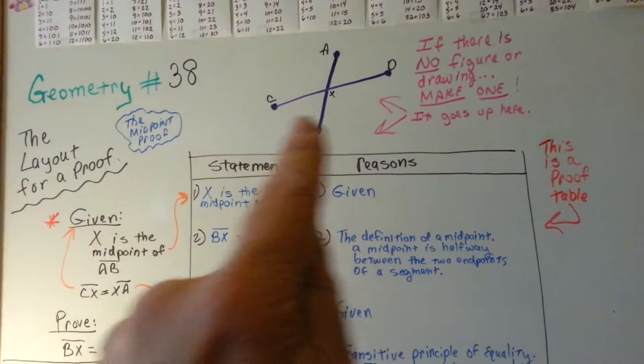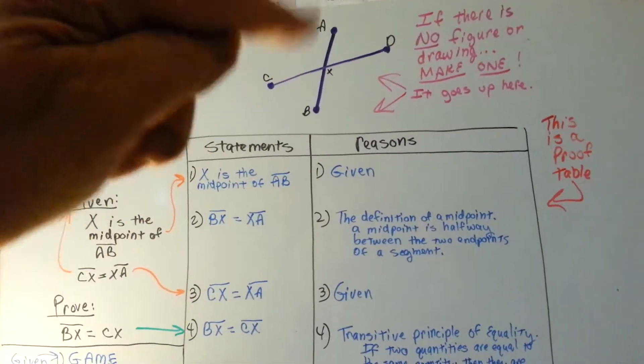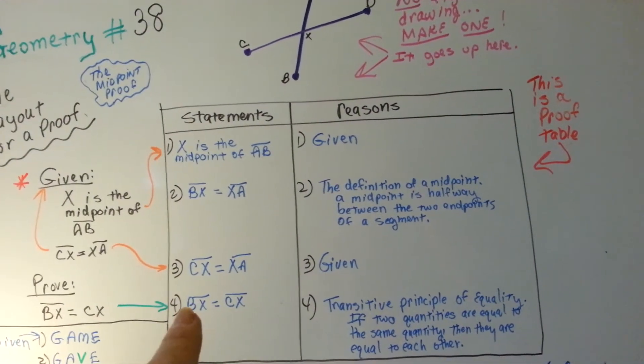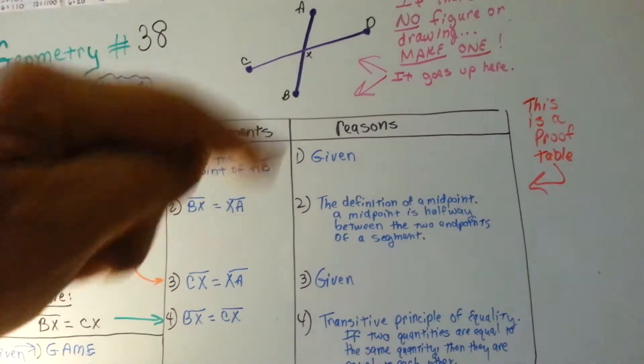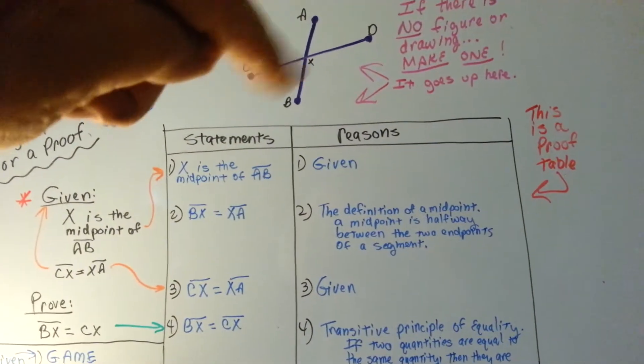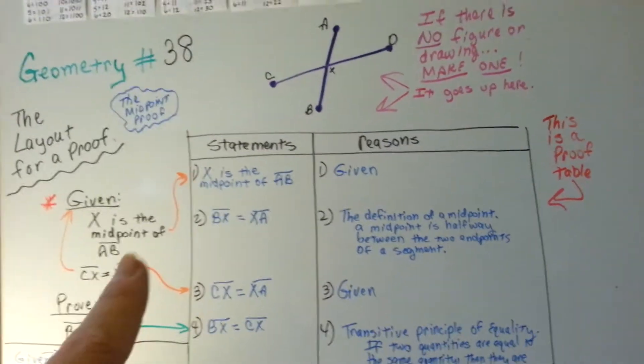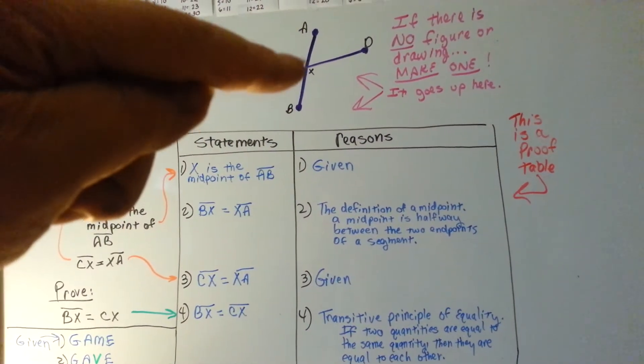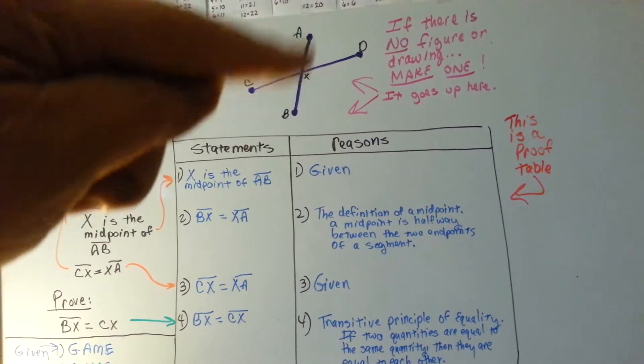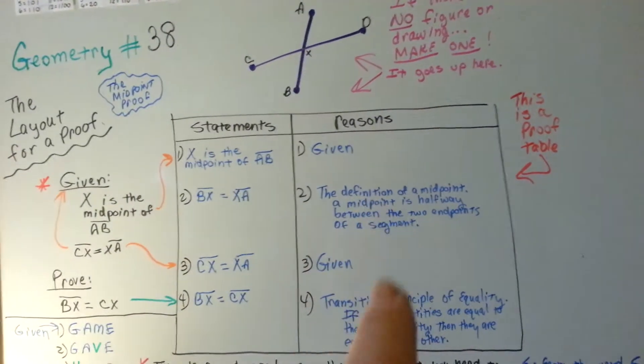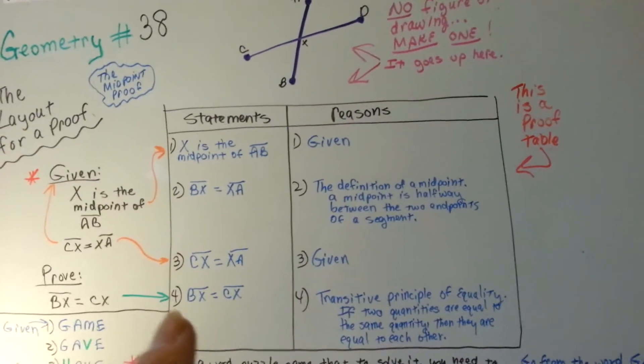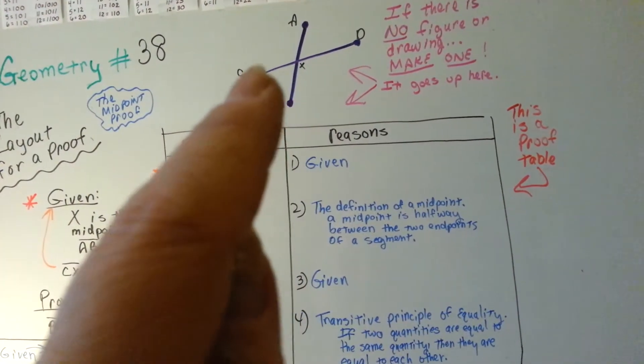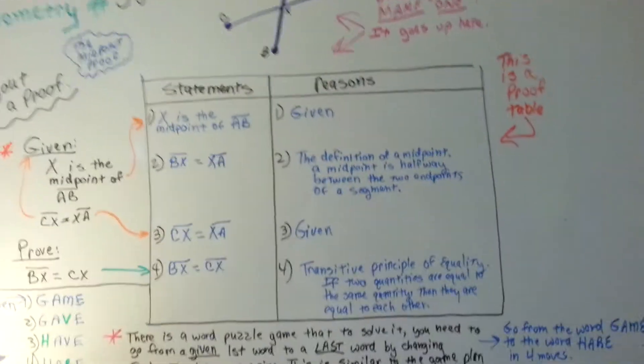So, if Cx is equal to xA, then segment Bx, this down here, is equal to Cx. Because of the midpoint definition that tells us that x is in between A and B, see that? And we use the definition as our reason. So, it's saying if this is equal to this and this is equal to this, then this is equal to this. Do you see what I'm saying?